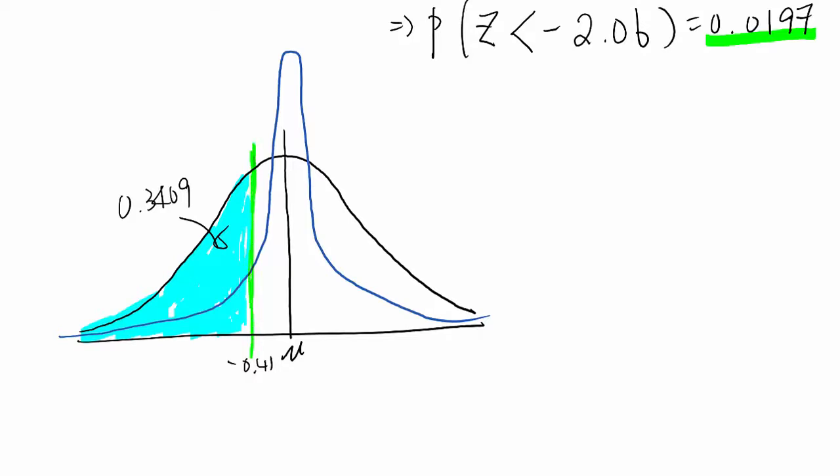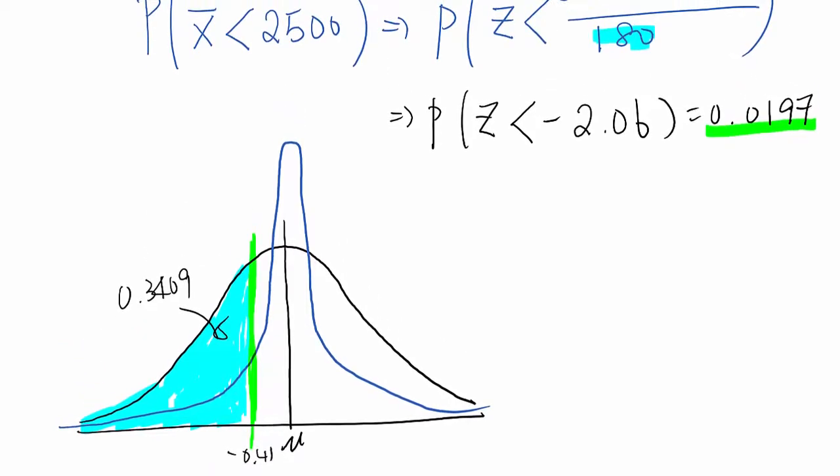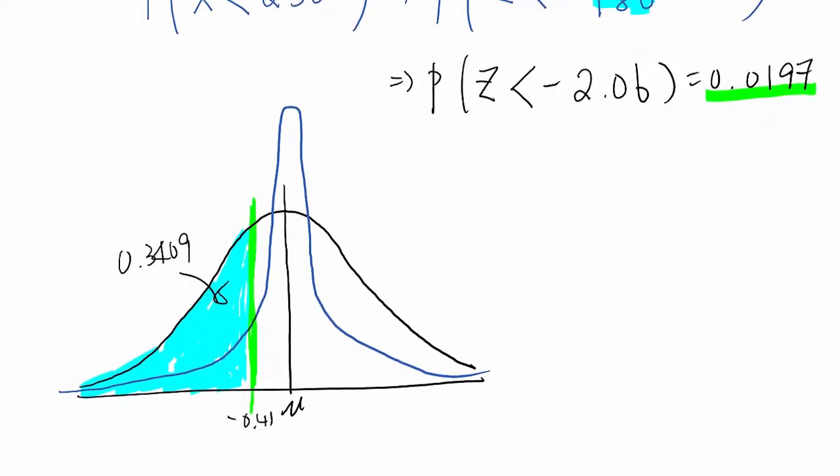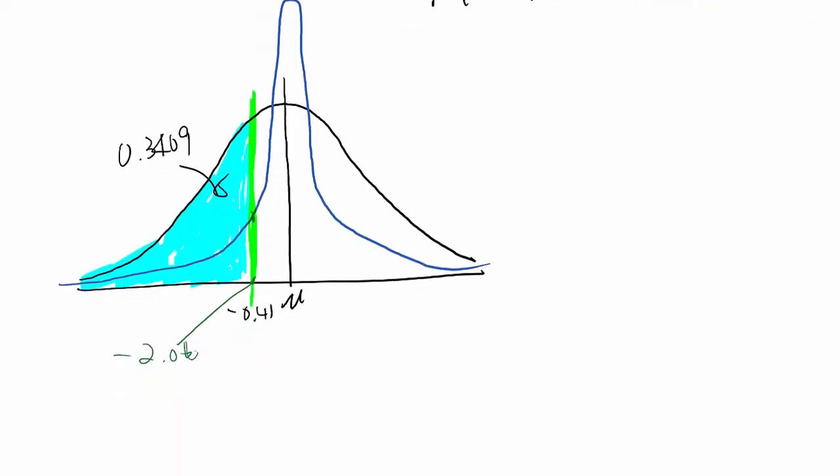So, after sampling distribution, the corresponding z-score will be negative 2.06. Which means, the distribution area value, which is until this here, basically.